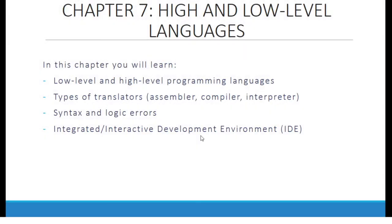Welcome back to the IGCSE Computer Science Code 0478 guide. In this chapter, we will be discussing high-level and low-level languages. You will learn about low-level and high-level programming languages, the types of translators, syntax and logic errors, and an integrated or interactive development environment.